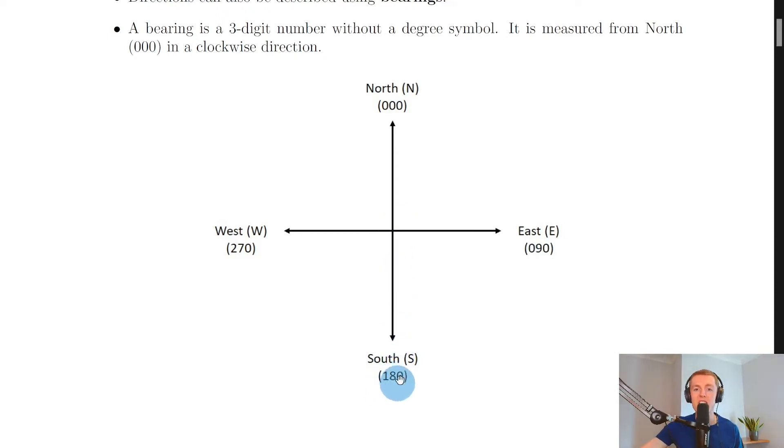We then move another 90 degrees and we get around to a bearing of 180 for south. We then move another 90 degrees round and we get to west, which has a bearing of 270. And then we move through another 90 degrees to get back to north, which would be a bearing of 360, but we can also say that's the same as 000, our starting point.